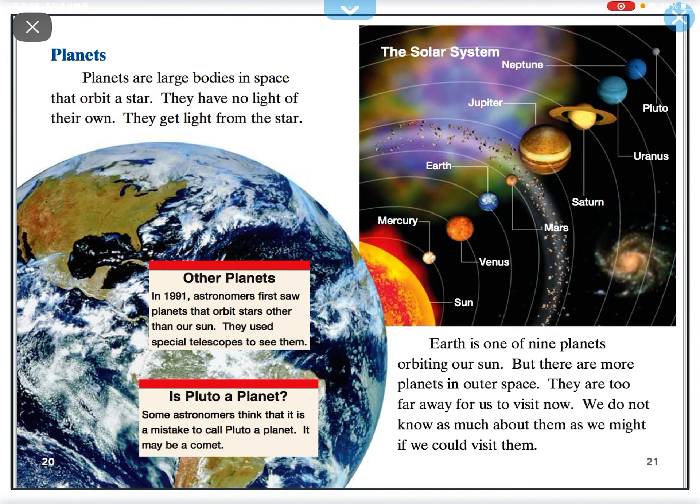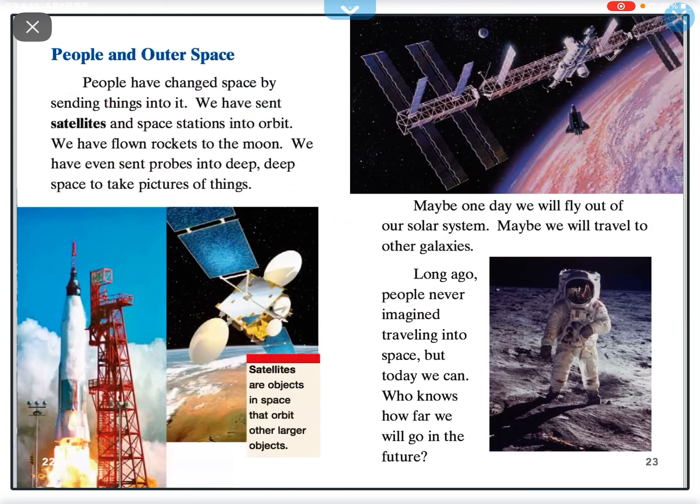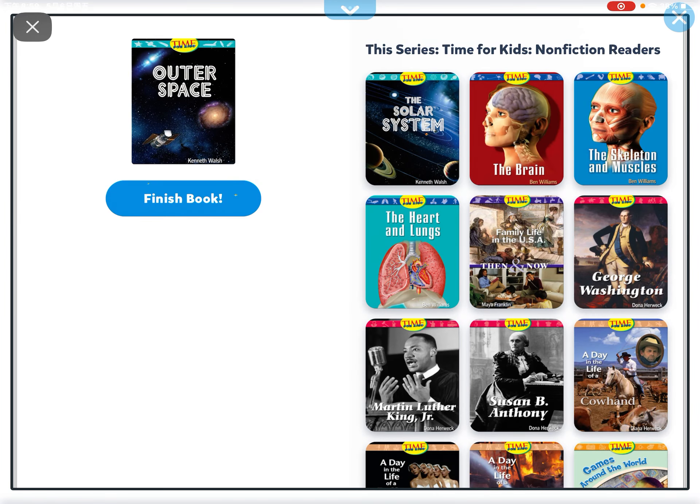People have changed space by sending things into it. We have sent satellites and space stations into orbit. We have flown rockets to the moon. We have even sent probes into deep, deep space to take pictures of things. Maybe one day we will fly out of our solar system. Maybe we will travel to other galaxies. Long ago people never imagined traveling into space. But today we can. Who knows how far we will go in the future.